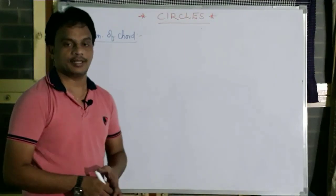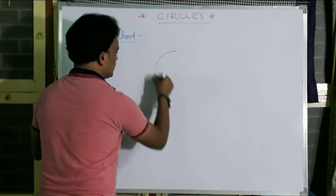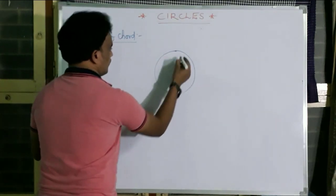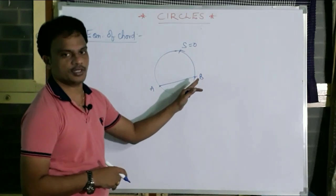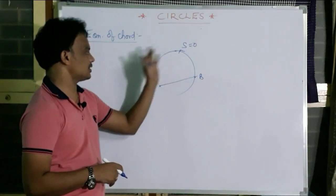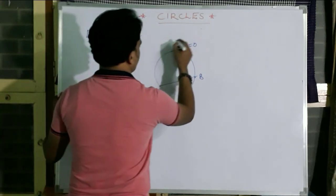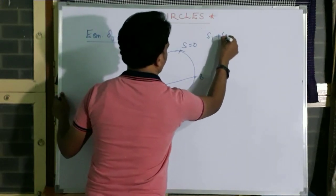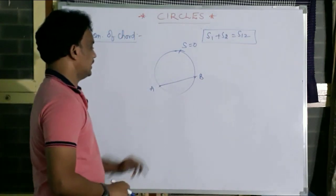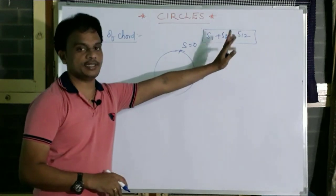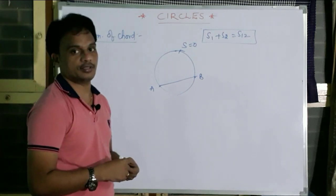We will move to the next concept: the equation of a chord. For the circle S equals 0, if A and B are any two points on the circle, the line joining them is called a chord. The equation of a chord for the circle S equals 0 is S1 plus S2 equals S12.